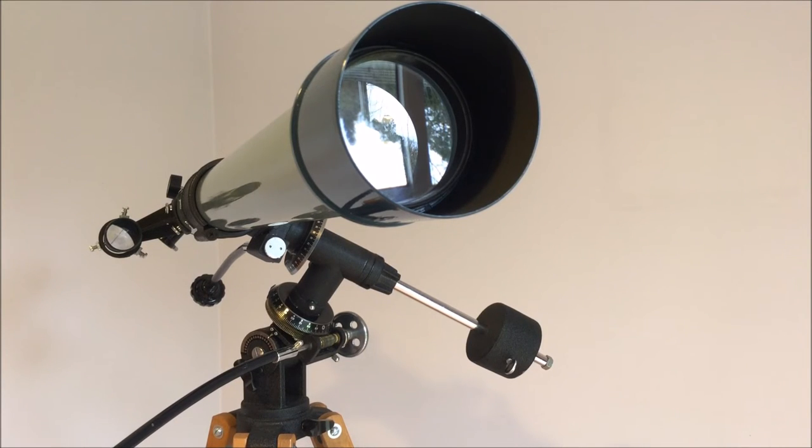Now for the business end. So the objective is a 60mm lens. It's a two-element lens, it's an achromat. And operating at the F15 ratio that this scope has, there's very little false color, and it gives very pleasing high magnification views of the Moon and the brighter planets.